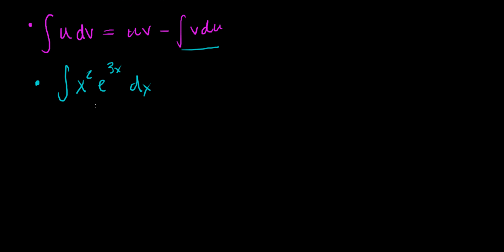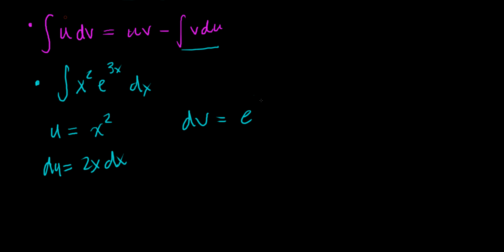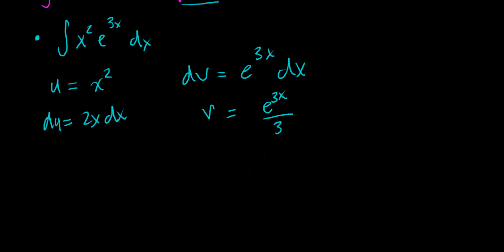So we want to do integration by parts, letting u equal the function that is decreasing in degree as we differentiate. So we let u equal x squared. Then du is equal to 2x dx. We let dv equal everything else — that's e to the 3x dx. When you integrate dv, you get v equal to e to the 3x divided by 3. Then when we apply the formula, the integral of x squared times e to the 3x dx equals u times v.